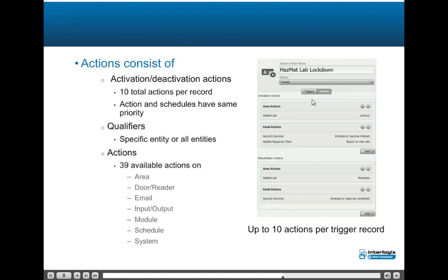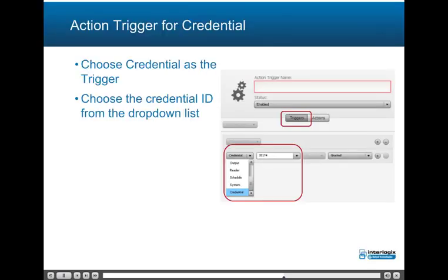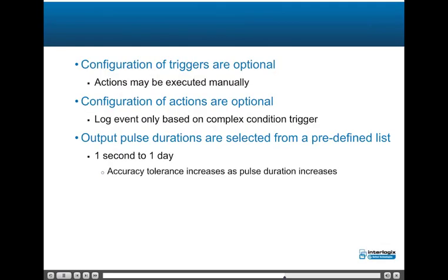Configuration of triggers is optional; actions may also be executed manually, and configuration of actions is optional. An option exists to log event only based on a complex condition trigger. Output pulse durations are selected from a pre-defined list from one second to one day; accuracy tolerance increases as pulse duration increases. Email notification action is processed FIFO when multiple actions occur; email text may be customized and is included on the first line of the email body. Retry limit controls delivery expiration relative to the time the action was triggered. Email notification events generated include: email successfully sent, email sent failed, all attempts failed, email sent expired (retry timed out prior to any delivery attempt), and email sent disabled (email notification is globally disabled).